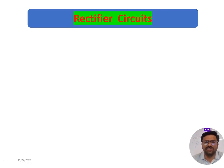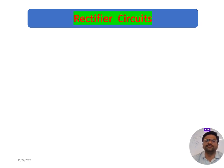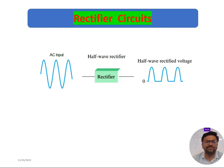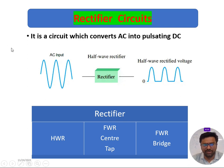Hello everyone, welcome. Today we are going to understand what are rectifier circuits and their types. A rectifier circuit is a diode-based circuitry which converts a continuous AC signal into a pulsating DC signal. There are three different types of rectifiers: half wave rectifier, center tap full wave rectifier, and bridge full wave rectifier.